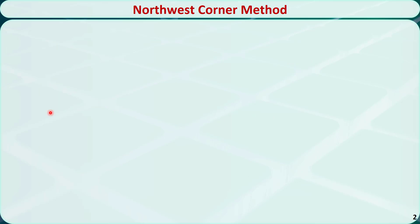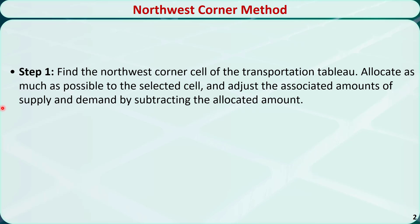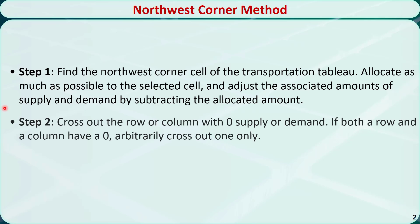There are three steps. In step 1, we need to find the Northwest Corner cell of the transportation tableau. Then we allocate as much as possible to the selected cell and adjust the associated amounts of supply and demand by subtracting the allocated amount.